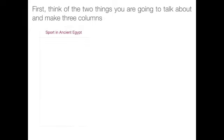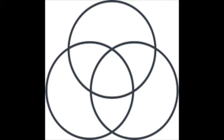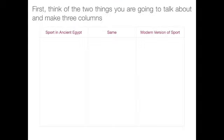The first thing you've got to do is think of the two things you're going to talk about. The easiest way to do that is to make three columns: one column about ancient times, one column about what they have in common, and the last column about the modern version. Some people like to use a Venn diagram, but I prefer columns because I have more room to write. One thing in one column, the other thing in the other column, and what they have in common in the middle.